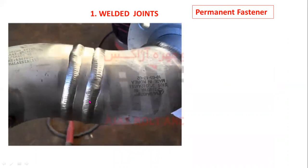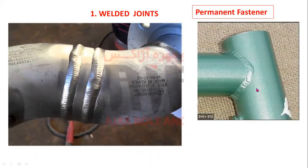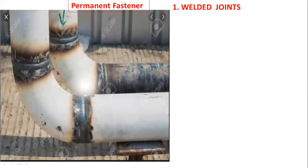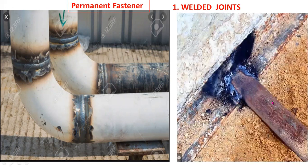This is also an example for a welded joint. This one is also an example for a welded joint. Here you can observe — this one is also an example for welding.